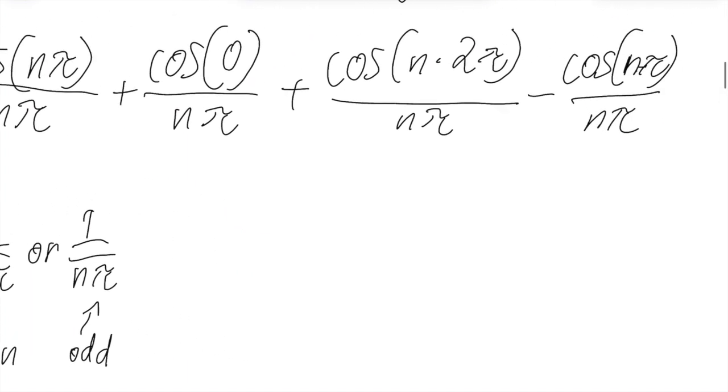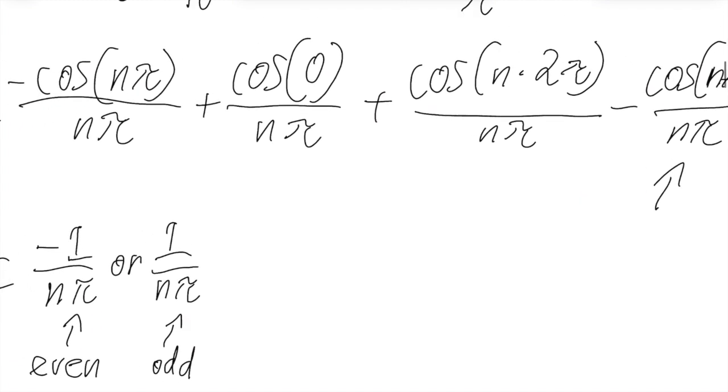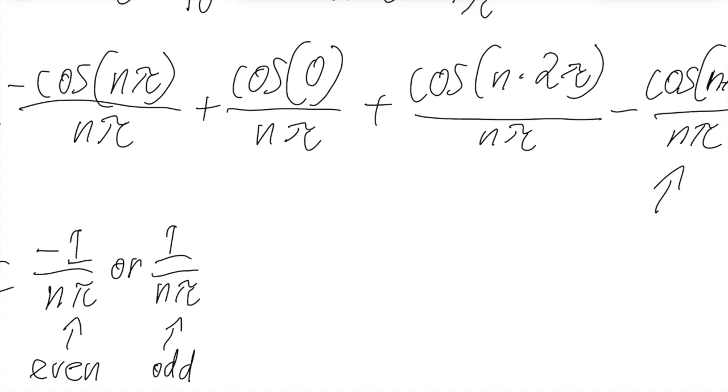And there's a similar thing for this negative cosine over nπ. As to cosine of 0, of course, that is 1. So it'll be 1 over nπ. Plus cosine of n times 2π. Because of that 2, this will always be an even multiple of π. And the cosine of an even multiple of π is just 1. So it'll also be 1 over nπ.